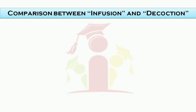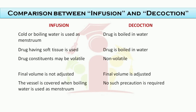Comparison between infusion and decoction: in infusion, cold or boiling water is used as menstruum, whereas in decoction the drug is boiled in water. Drugs having soft tissue are used in infusion whereas hard or woody drugs are used in decoction. Drug constituents may be volatile in infusion but are non-volatile in decoction. Final volume is not adjusted in infusion whereas final volume is adjusted in decoction. The vessel is covered in infusion when boiling water is used so that the volume remains constant, but no such precaution is required in decoction.